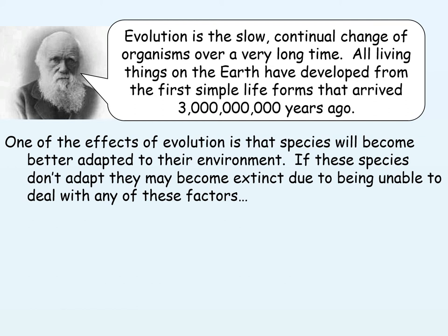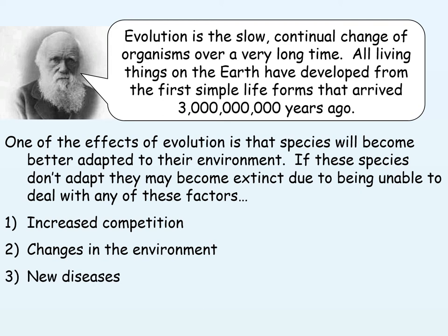Evolution happens as species become better adapted to their environment. If species don't adapt, they will become extinct and unable to deal with these factors. Organisms evolve, and the ones that are better adapted will continue to evolve. The ones that are not adapted to their environment will become extinct — due to competition, changes in the environment, new diseases being introduced, or new predators. Humans are huge predators and we are causing the extinction of many species. The white rhino has just become extinct, and that is down to human predation.